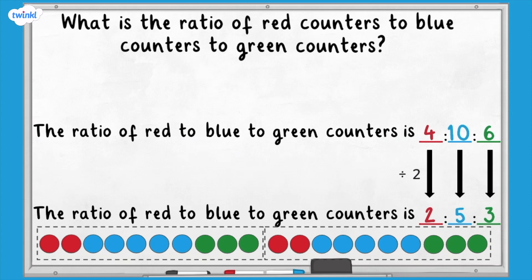For every two red counters, there are five blue counters and three green counters.